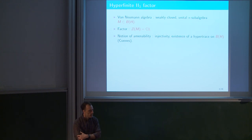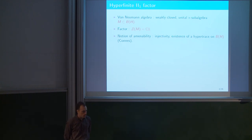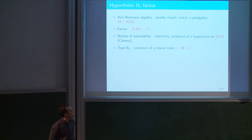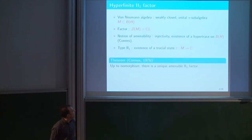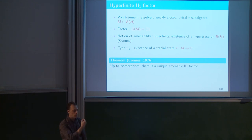One can formulate, given a von Neumann algebra M living in B(H), the existence of a specific functional on B(H) playing the role of the mean, called a hypertrace. We will be restricting mostly to so-called type II₁ factors — those that admit a tracial state, a state on the factor satisfying the trace property. The fundamental theorem for the entire talk is Alain Connes' theorem from 1976, saying that up to isomorphism there is only one amenable type II₁ factor. It's the so-called hyperfinite II₁ factor.